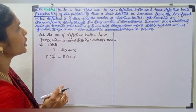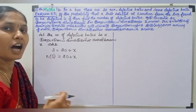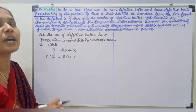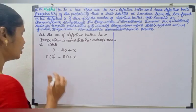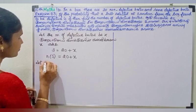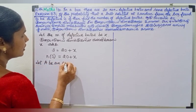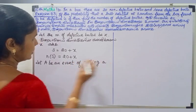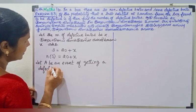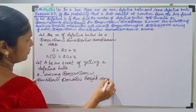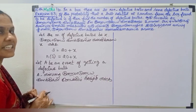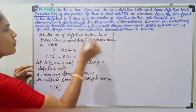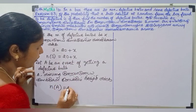So, n of S is 20 plus x. Let A be an event of getting a defective ball. So, n of A is x.